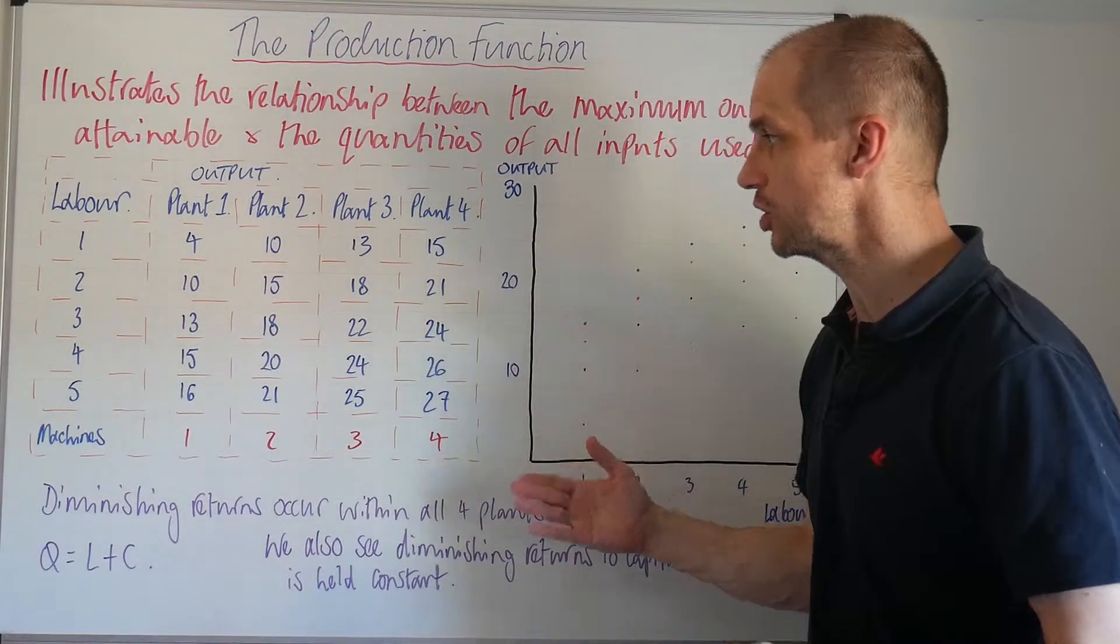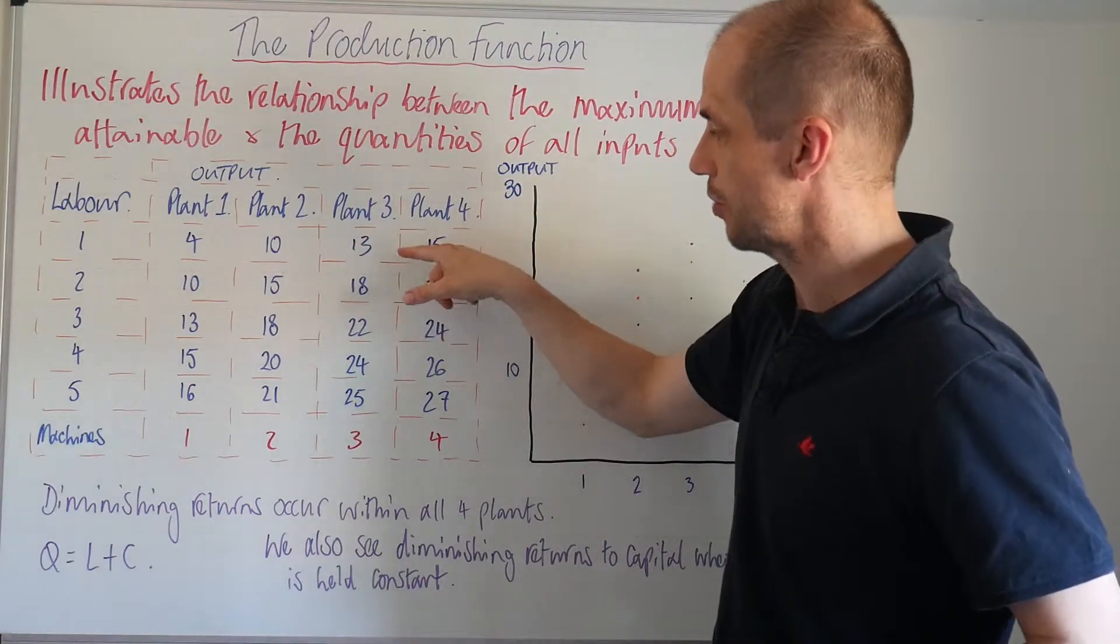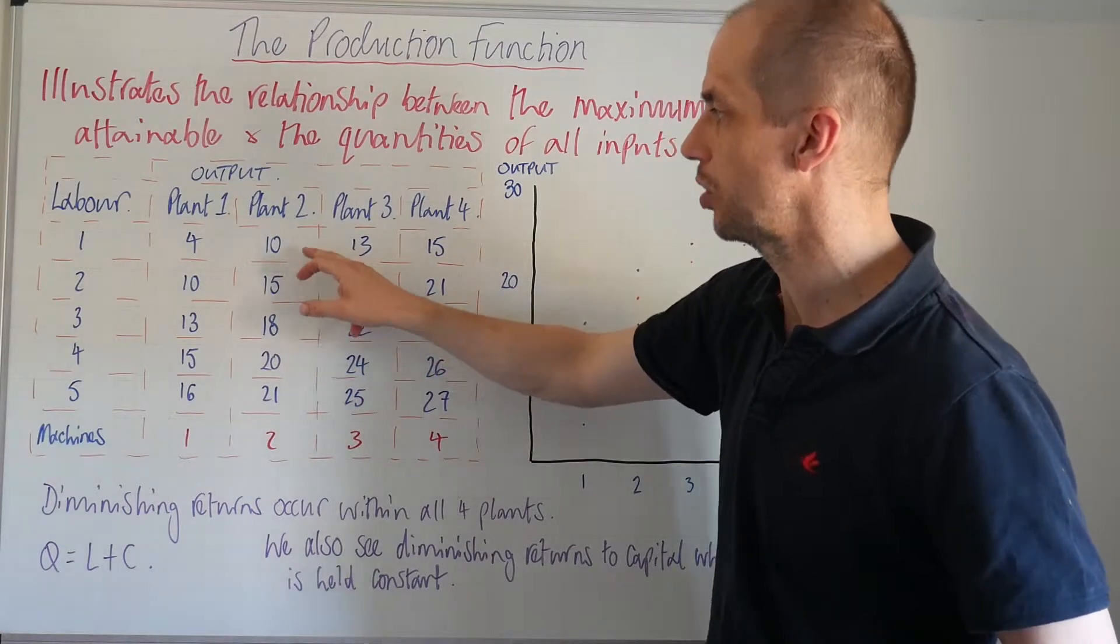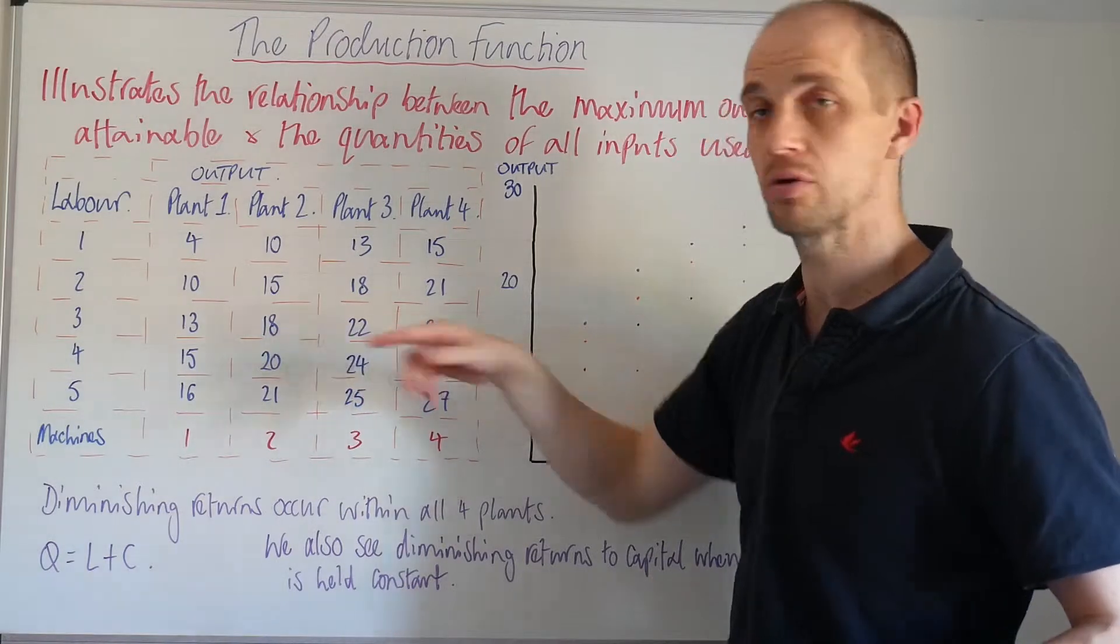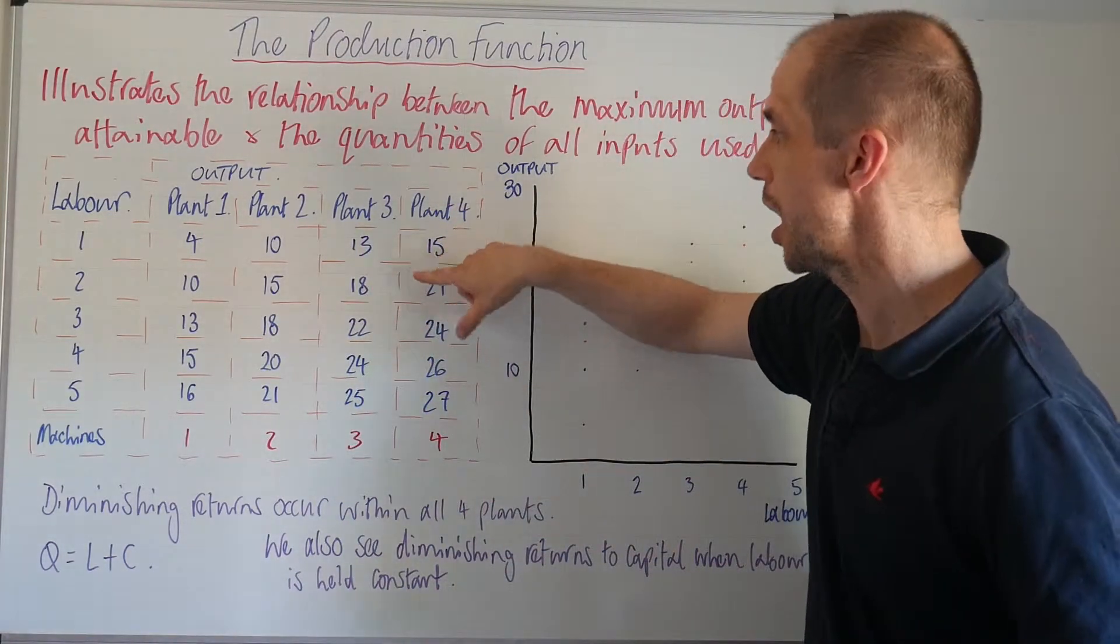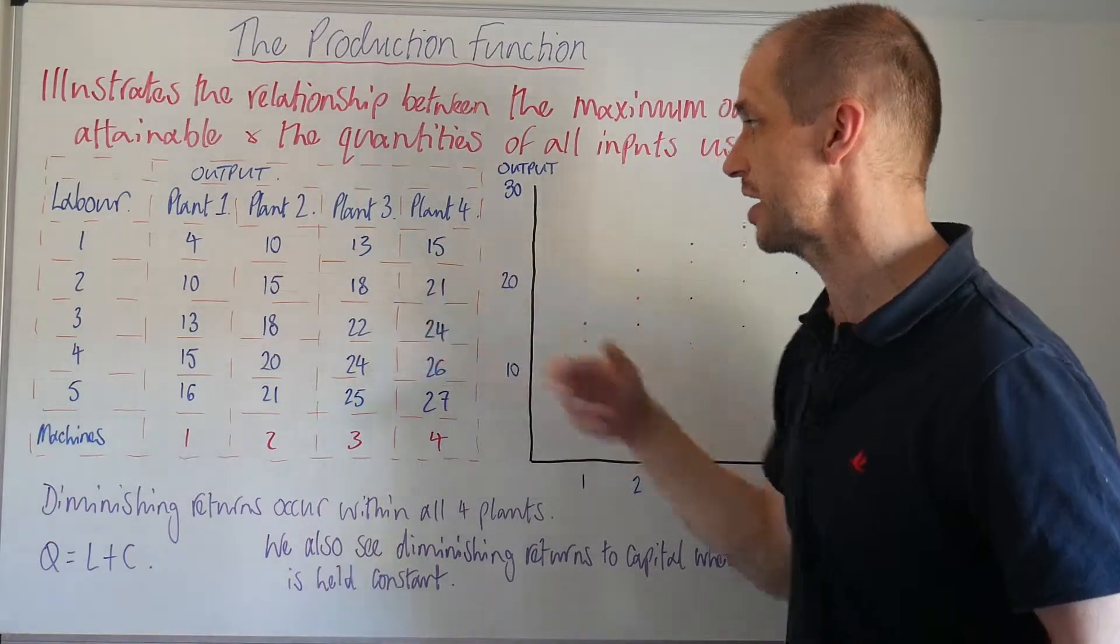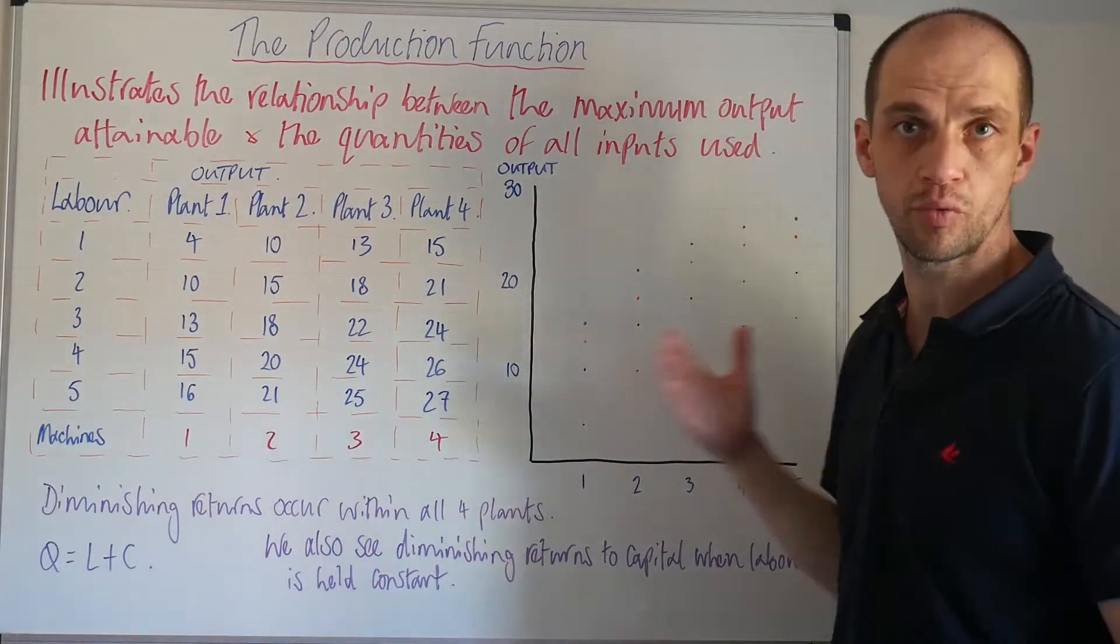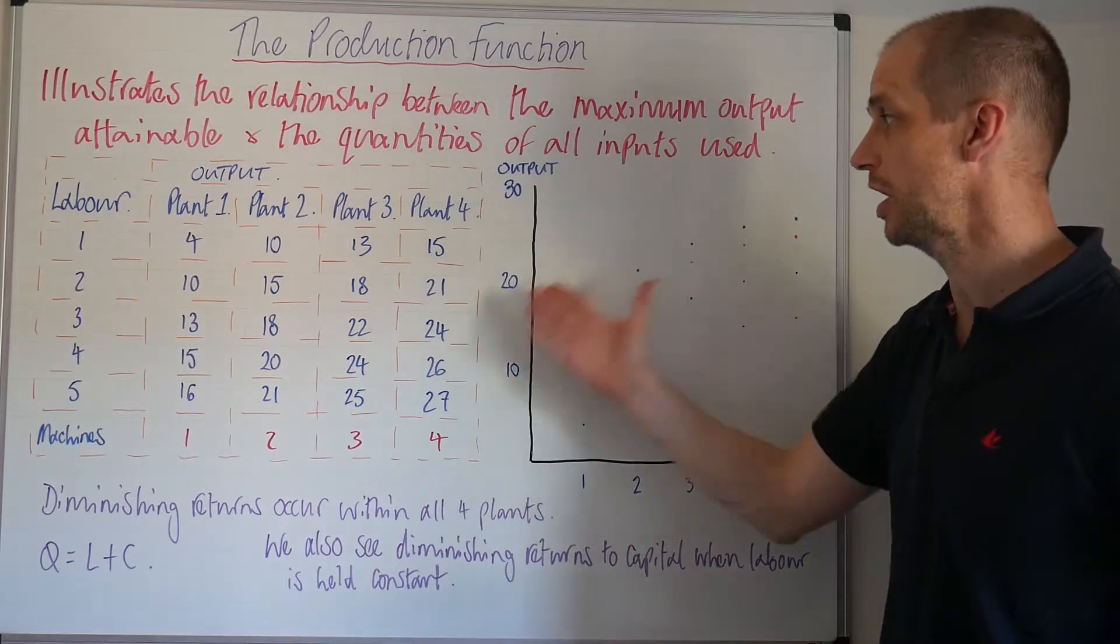Now what's really interesting through this table is we see this right across, so we go from ten to fifteen, so that's marginal productivity of course of five, and then we only go up by three, so once again we see diminishing marginal returns. Here we see thirteen to eighteen, so five, and then down to four. Here we've got six and then down to three, so we do see those diminishing marginal returns within each of these.